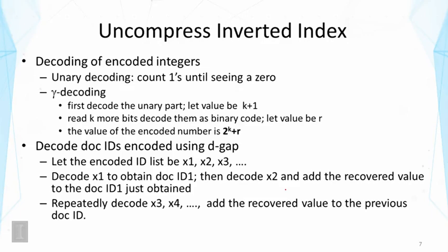To decompress an inverted index, first decode the encoded integers using the appropriate method (unary or gamma as discussed). For document IDs compressed with d-gap, use sequential decoding: decode X1 to get the first document ID (ID1), then decode X2 (the gap) and add it to ID1 to recover the second ID, and so on. Each decoded document ID relies on the previous one to recover the next, repeating until all documents are decoded.